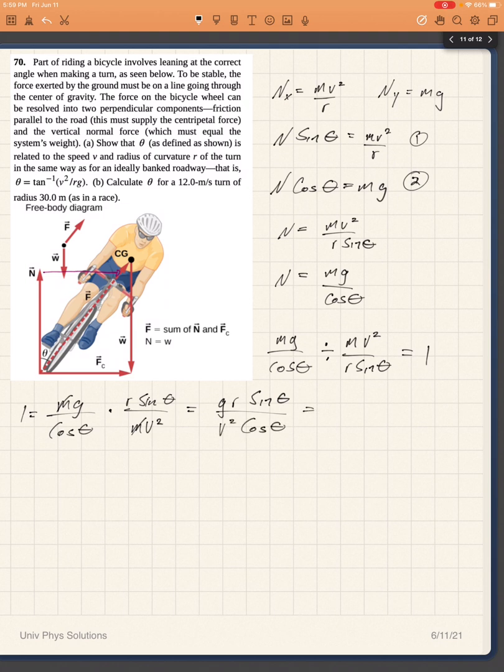Now sine over cosine is tangent. So I have gr over v squared times tangent of theta is equal to one. So I can solve for theta. I will multiply v squared and divide by gr. So tangent of theta is equal to v squared over gr.